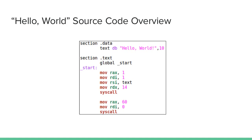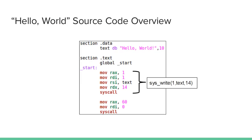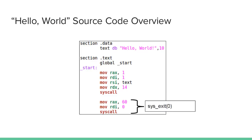To take a quick overview: here we define bytes Hello World and label the memory address as text. Here we do syswrite and pass in the arguments 1 meaning standard output, text meaning the memory address of the text you want to write to the screen, 14 as the length of that text, and then sysexit zero meaning we're going to exit our code with an error code of zero.